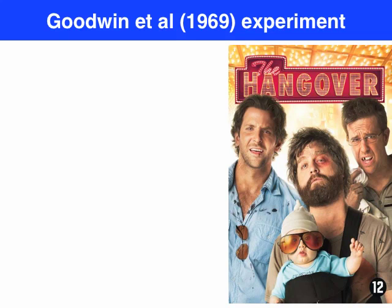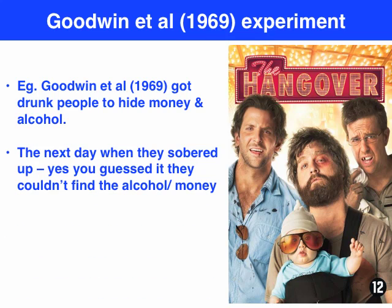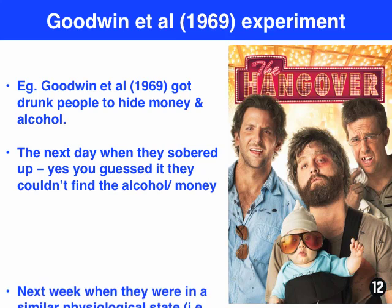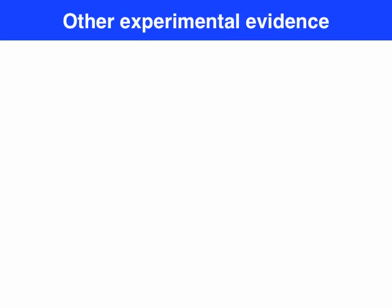There are numerous studies that back up the notion of state-dependent cues. A classic study by Goodwin got drunk people to hide money and alcohol. The next day, when they were in a different physiological state, their retrieval was low — they forgot where they hid their money and alcohol. But the next time they were in a similar physiological state, being drunk again, they could remember where they actually stored that money or alcohol.